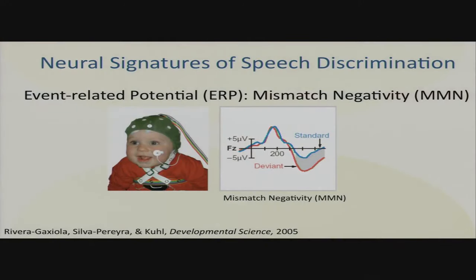Whether you do these measures with behavior as we did 20 years ago, or whether you use event-related potentials and play a background sound with a deviant, you see the same results from studies across all these countries: babies are universalists, citizens of the world to begin with, and then become culture-bound listeners by about 12 months.